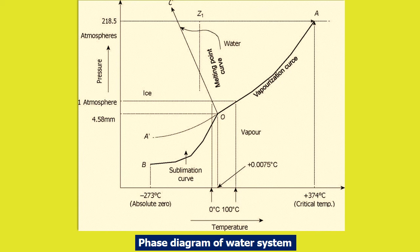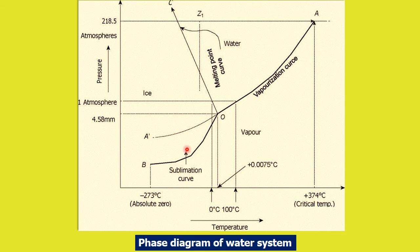This is the typical phase diagram of a one component water system. Here you can see an area where we have only ice, an area where we have only water, and an area where we have water vapor. These lines are the bridging points for these areas. On the curve OC, ice and water are in equilibrium. On the curve OA, ice and water vapor are in equilibrium — it is called the sublimation curve. Curve OB is the vapor pressure curve and curve OC is the melting point curve.